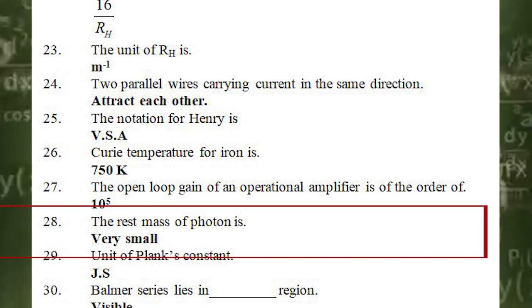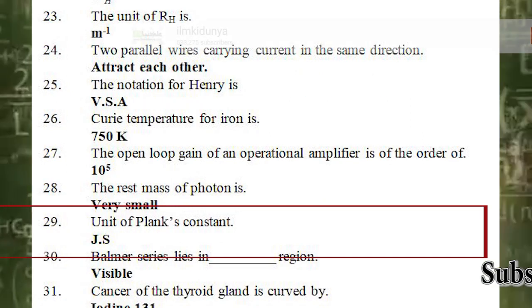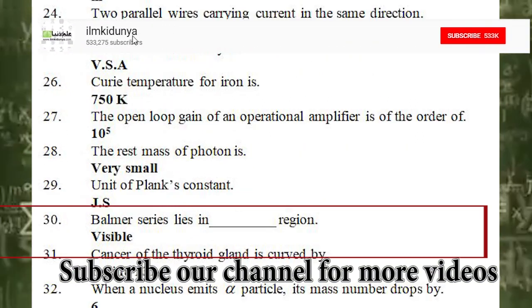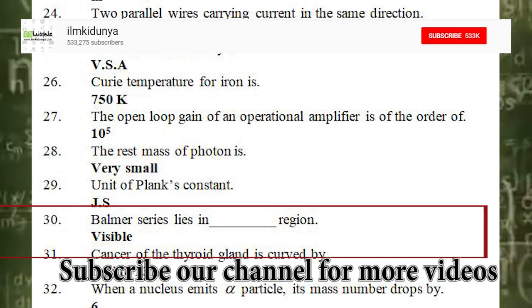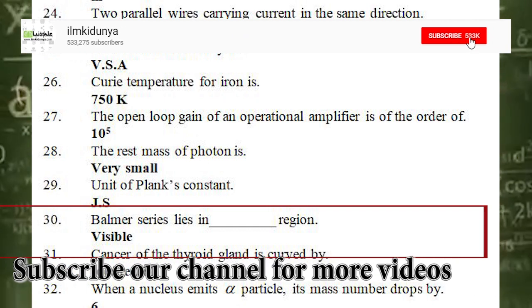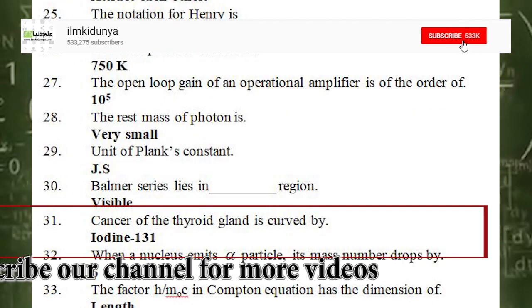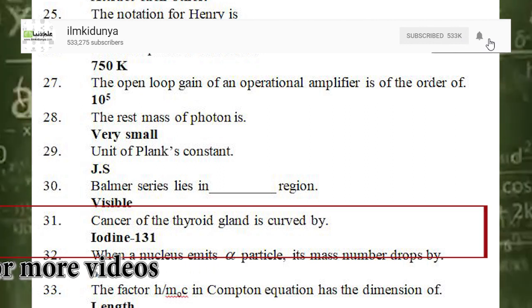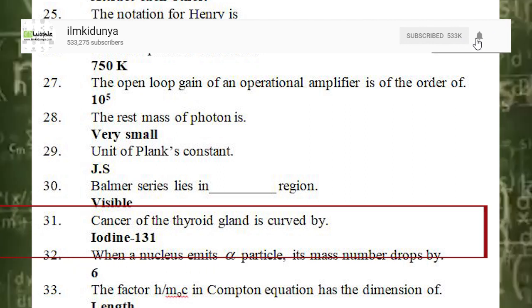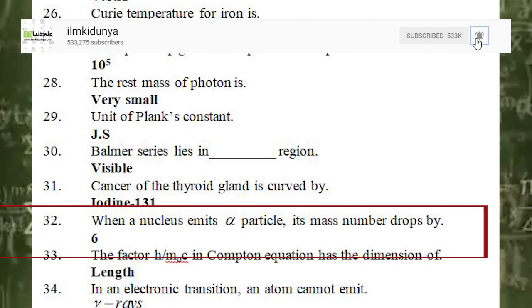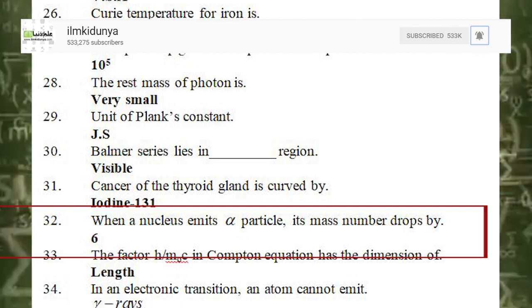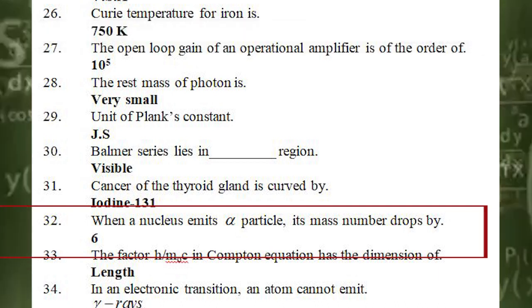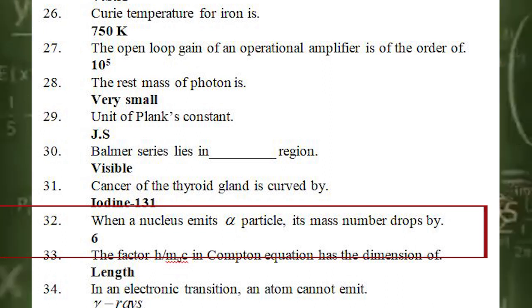The 29th statement is: the unit of Planck's constant is. The correct answer is J·s (joule-seconds). The 30th statement is: the Balmer series lies in which region. The correct answer is the visible region. The 31st statement is: cancer of the thyroid gland is treated by. The correct answer is iodine-131. The 32nd statement is: when a nucleus emits an alpha particle, its mass number drops by. The correct answer is 4.